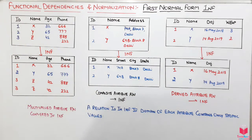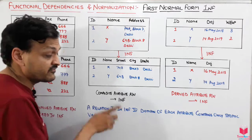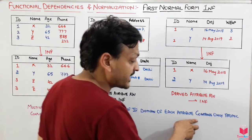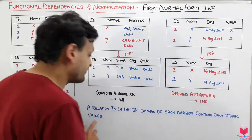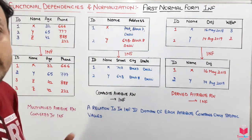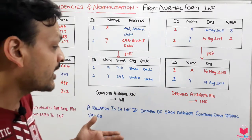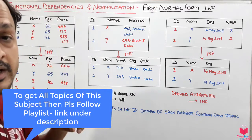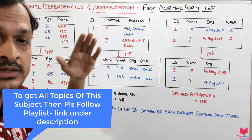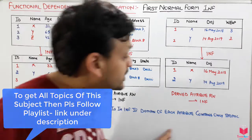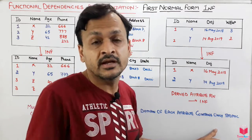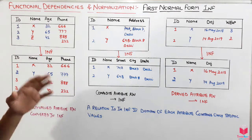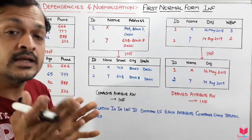The First Normal Form states that a relation R is in First Normal Form if the domain of each attribute contains only atomic values. That means, in a table, the values under each attribute should be atomic. So in First Normal Form, we have to create atomicity in the table.